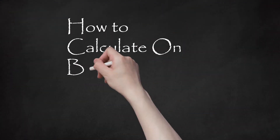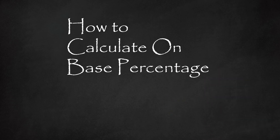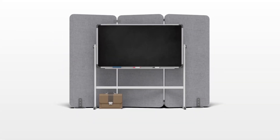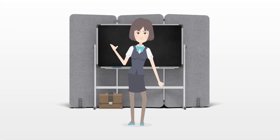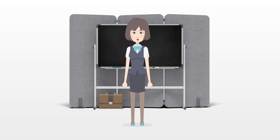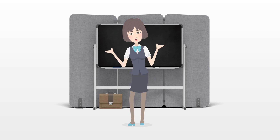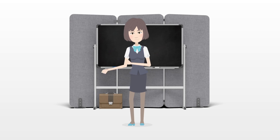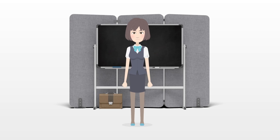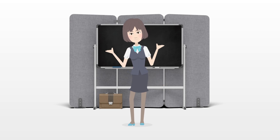How to calculate on-base percentage. The on-base percentage, OBP, is a statistical formula used primarily in baseball and softball. It indicates how often, overall, a batter reaches a base, or, put another way, how often, overall, a batter avoids an out.